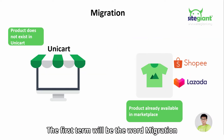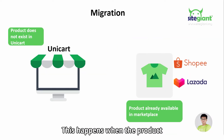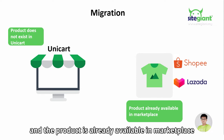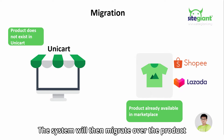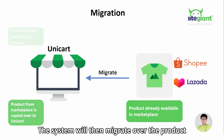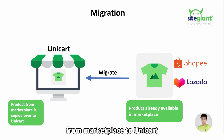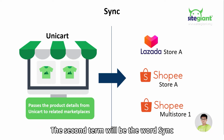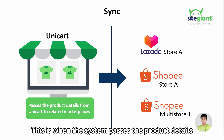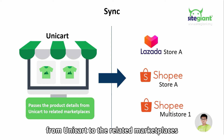The first term will be the word migration. This happens when the product doesn't exist in Unicard and the product is already available in Marketplace. The system will then migrate over the product from Marketplace to Unicard. The second term will be the word sync. This is when the system passes the product details from Unicard to the related Marketplaces.